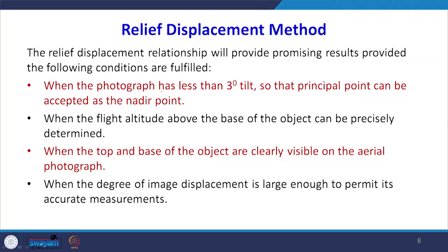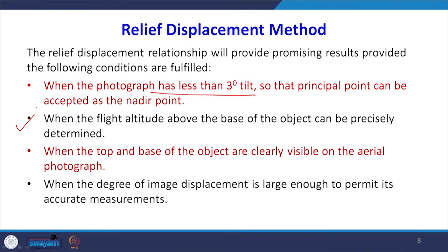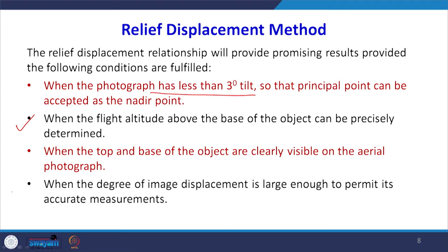The relief displacement method gives good results provided the photograph is vertical — meaning less than 3 degrees of tilt — as the principal point and nadir point coincide on a truly vertical photograph. The flight altitude above the base of the object must be precisely determined, and the top and base of the object must be clearly visible. Image displacement must be large enough to permit accurate measurement.